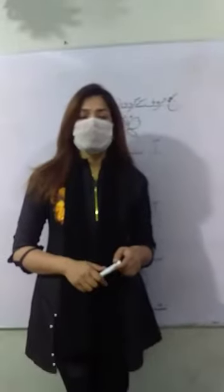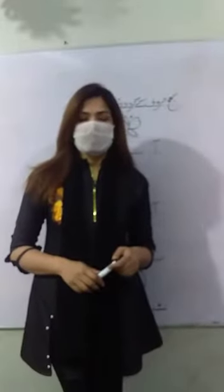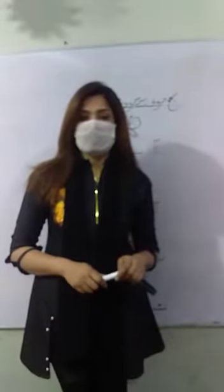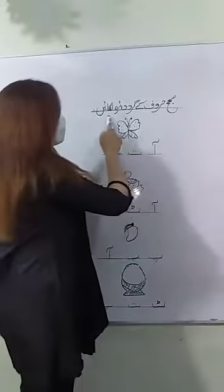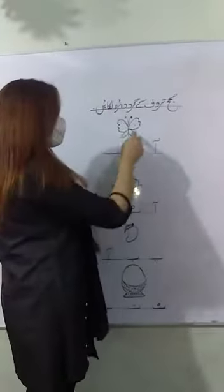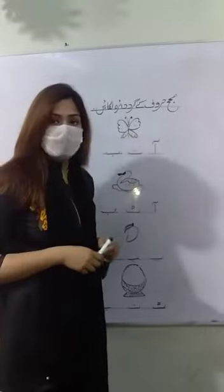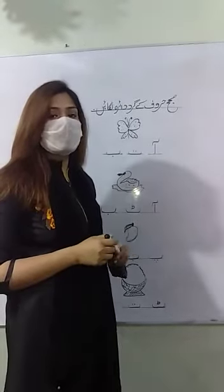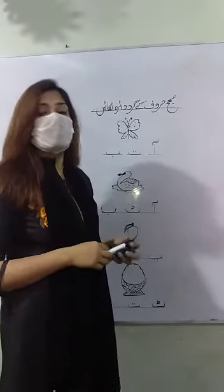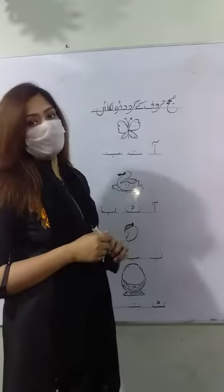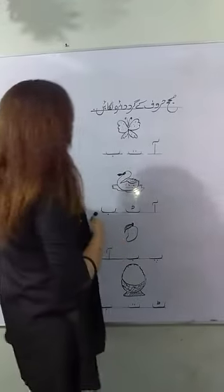Assalamu alaikum. Progressive Model School Main Campus. Today our subject is Urdu for Great Nursery and the topic name is Saheer Haraof کے دائرہ لگائیں. یہ ہمارے پاس کچھ حروف ہے اور ان کے ساتھ تصویر بنی ہوئے ہیں۔ ان تصویر کو ہم نے دیکھنا ہے کہ اس ساتھ میں کون سی آواز اس حرف کے مطابق ہے، پھر ہم نے اس حرف کو دائرہ لگانا ہے۔